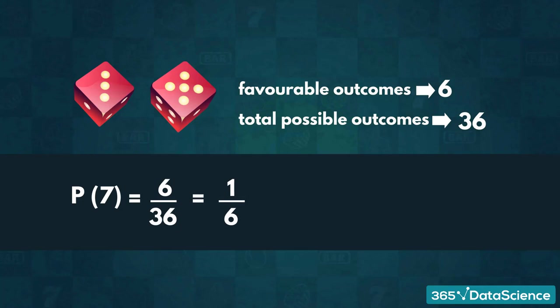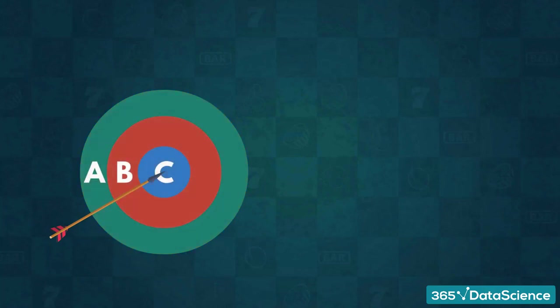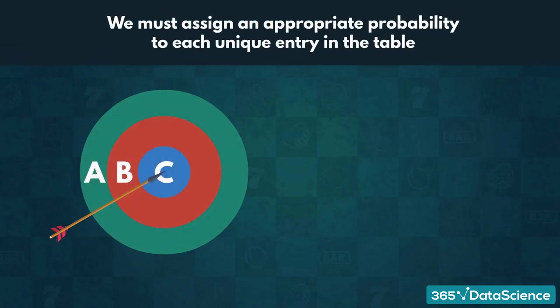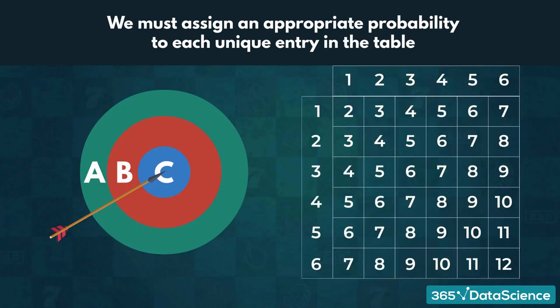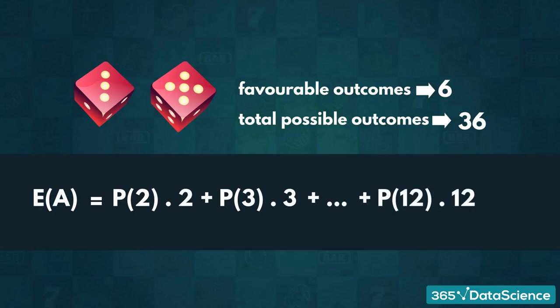Notice how 7 occurs 6 times in the table. This means we have 6 favorable outcomes. As we already mentioned, there are 36 possible outcomes. So the chance of getting a 7 equals 6/36, or just 1/6. Let's also compute the expected value for this event. Since we are dealing with numerical data, we should apply the same formula we used for the archery problem. To do so, we must assign an appropriate probability to each unique entry in the table. If we do so, we are going to get the expected value, which ends up being 7.